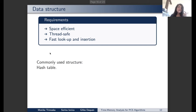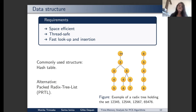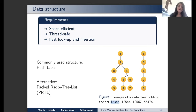In this work, we propose replacing the hash table with an alternative structure we call a Packed Radix Tree List (PRTL). Our structure is inspired by radix trees. A radix tree is a tree where each node is one character of the word being stored — here we use base 8, so we think in letters and words, but in general think bits and bit vectors.